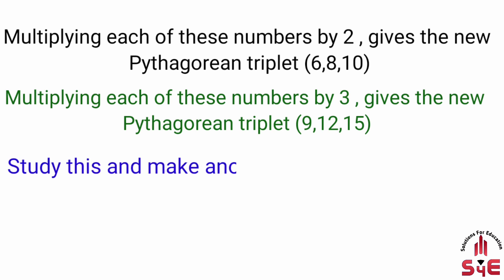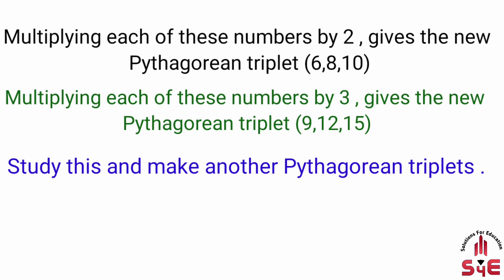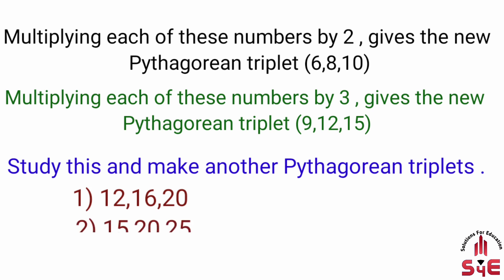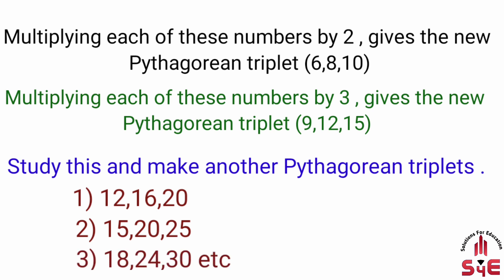Now study this and make other Pythagorean triplets. इस तरह से आप इन Pythagorean triplets का study करके new Pythagorean triplets बनाइए। अगर दिये गए नंबर को 4 से multiply करें तो 12, 16, 20; 5 से multiply करने पर 15, 20, 25; और 6 से multiply करने पर 18, 24, 30 — इस तरह से infinite Pythagorean triplets बनाए जा सकते हैं।